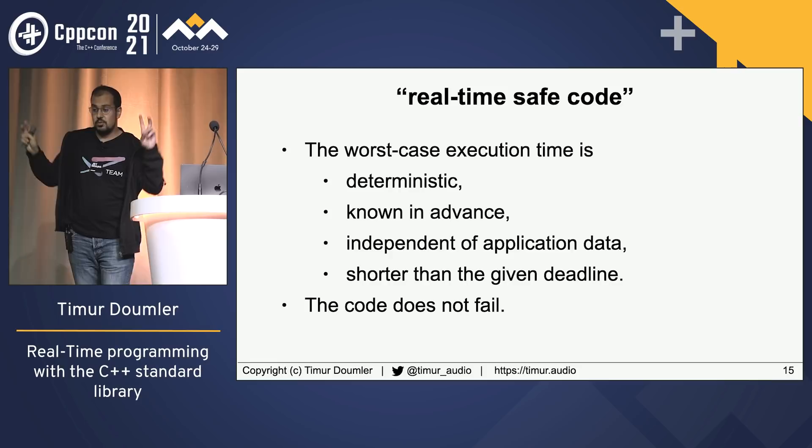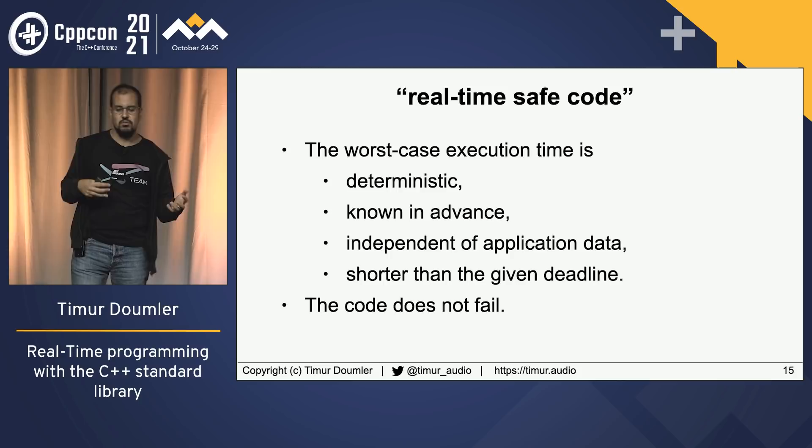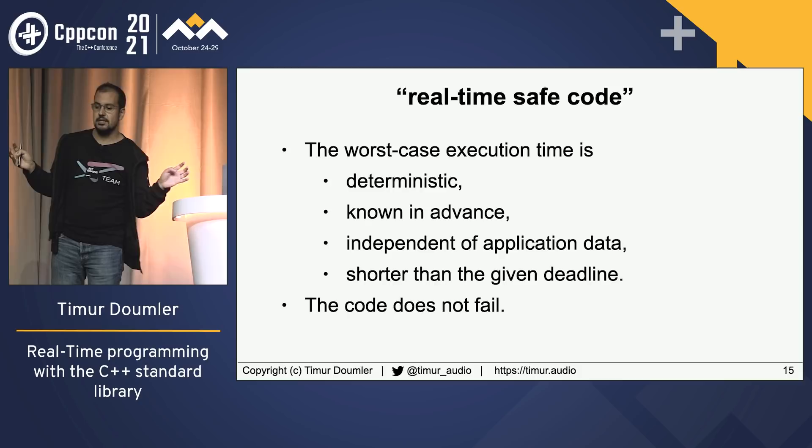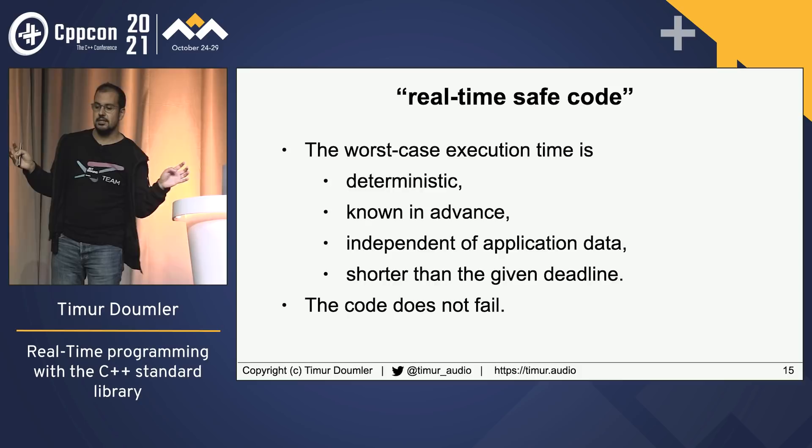What's real-time safe code? We don't care about average time so much — we really care about the worst-case execution time (WCET). We need to make sure the WCET of any function is deterministic and known in advance, won't increase due to unknown data input, and that the upper limit is shorter than our deadline.